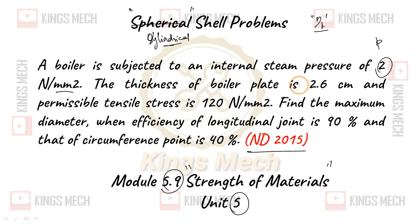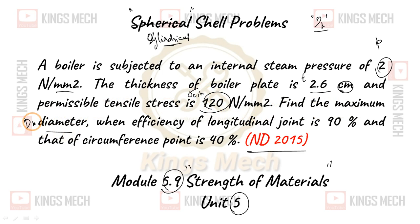The thickness of the boiler plate is 2.6 millimeters and the permissible tensile stress, sigma_c or sigma_h, is equal to 120. Find the maximum diameter D_max when the efficiency of the longitudinal joint is 0.9 (90%) and the circumferential joint is 0.4 (40%).